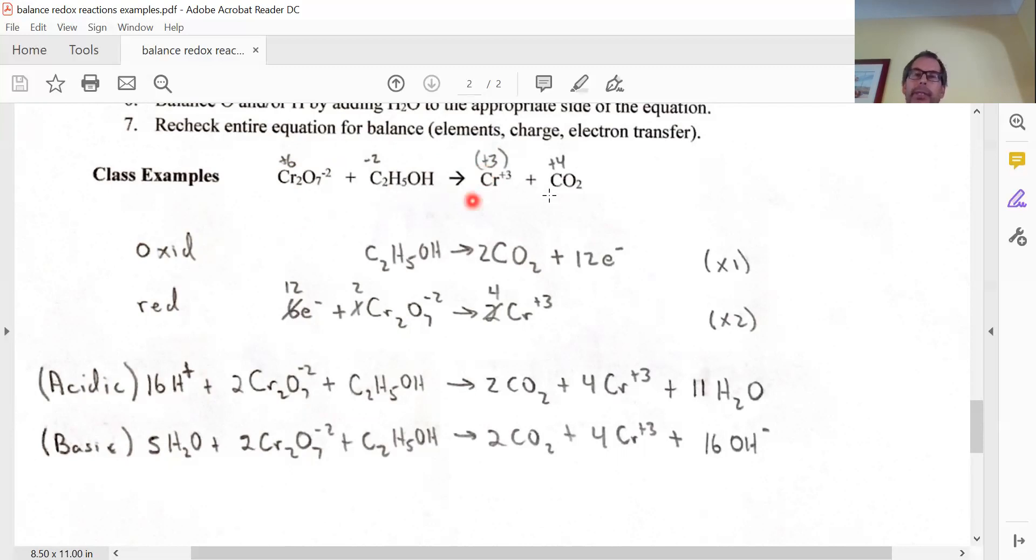Carbon's not so easy to figure out. I'm going to start with this one. If oxygen's minus two and there's two of them, it's going to be minus four. Carbon has to be plus four.